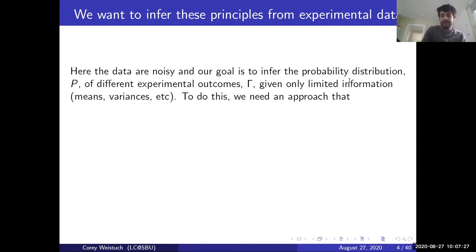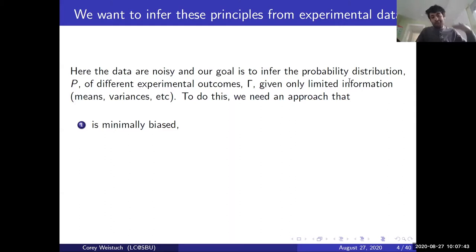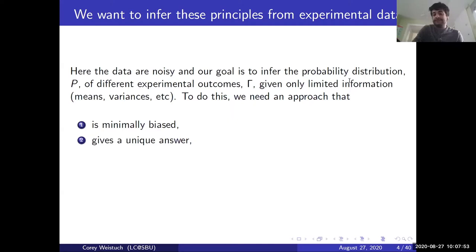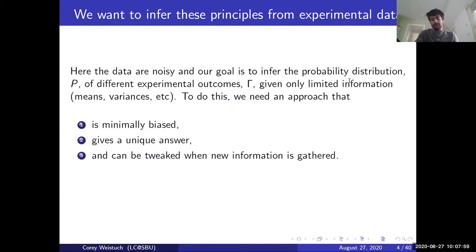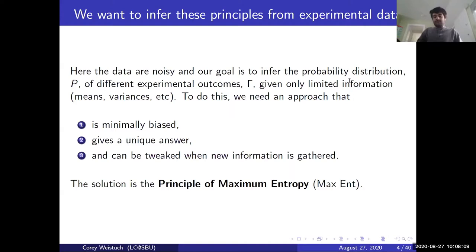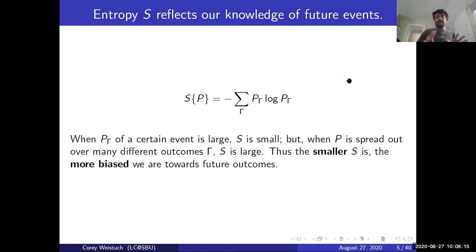What we need to do is figure out a way to infer some kind of model of P using only this limited information. We need something that's minimally biased—beforehand, we don't know what the answer is and we want to make sure our answer is not completely unreasonable. For example, if it's sunny today, we don't want a model that says there's going to be a 100% chance of rain tomorrow. We also want it to give a unique answer so we can say something definitive, and we want it to be adaptive—tweakable when we get new information without having to start over. The solution we use is called the principle of maximum entropy, or MaxEnt.